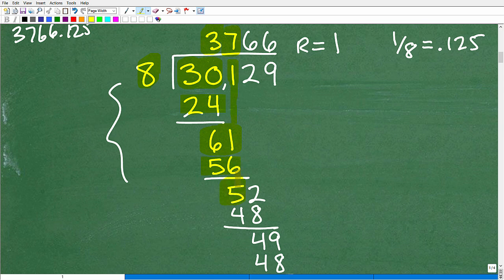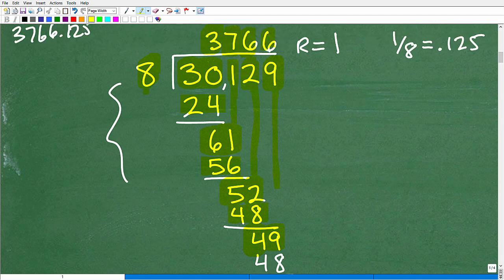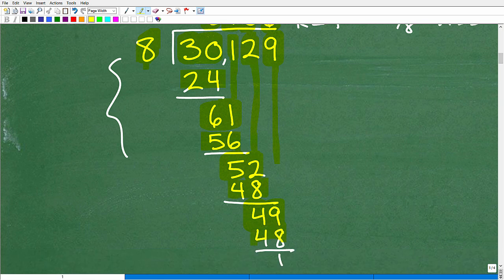Then I ask myself again, can 8 go into 5? No, so I've got to drop down a 2. 8 could go into 52, how many times? 6 times. So 6 times 8, that's 48. Then I subtract here, I get 4. Can 8 go into 4? Nope. So then I've got to drop down that last digit, 9, so I have 49, so 8 goes into 49 how many times? 6 times, so 6 times 8 is of course 48.